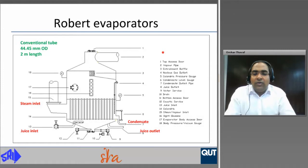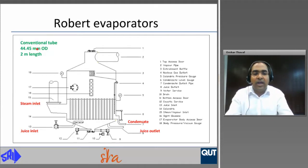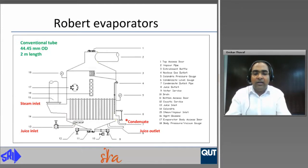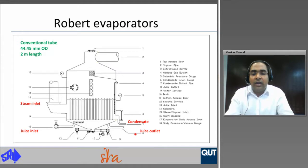The figure shows an example of a robot evaporator with conventional tube dimensions of 44.45 millimeter outside diameter and 2 meter length. It shows the steam inlet from the steam annulus and the juice entry into the vessel from the bottom. The condensate leaves from this end and the juice is taken off from the bottom, calling it an under-and-under configuration.